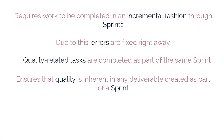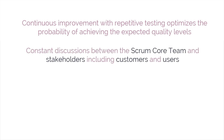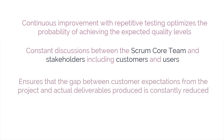This ensures quality is inherent in any deliverable created as part of a sprint. Such potentially shippable deliverables from Scrum projects are also referred to as 'done.' For example, if internal customers are not happy with a product's quality, the issues can be listed in the prioritized product backlog and addressed during sprints. Thus, continuous improvement with repetitive testing optimizes the probability of achieving expected quality levels. Constant discussions between the Scrum core team and stakeholders, with actual increments delivered at the end of every sprint, ensure the gap between customer expectations and actual deliverables is constantly reduced.